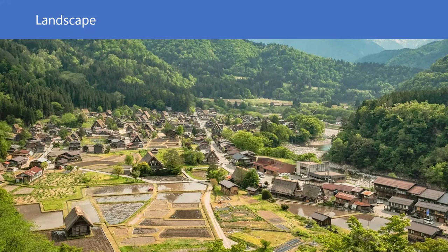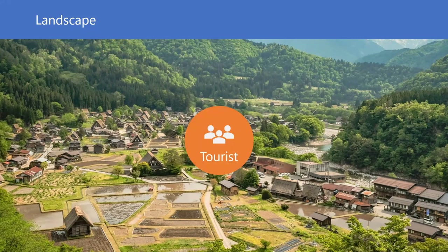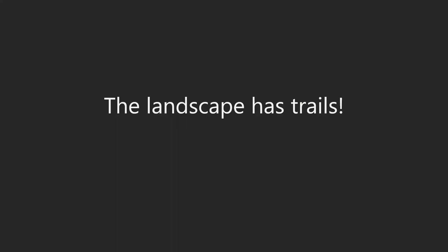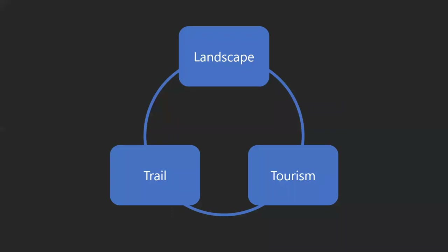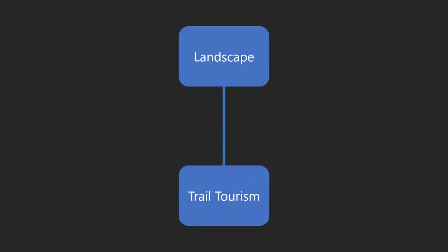Please focus on these tourists again. How do these tourists move in this landscape? They move on trails. This is true not only in this landscape but also in tourism and our ordinary life — we always move on trails. From that we can say the landscape always has trails. So landscape, tourism, and trails are closely related to each other, and trail-based tourism is also connected to the landscape.